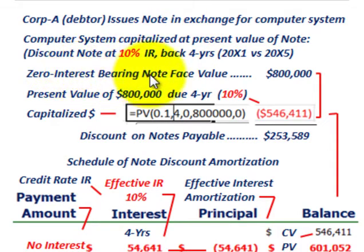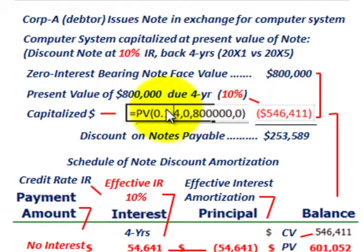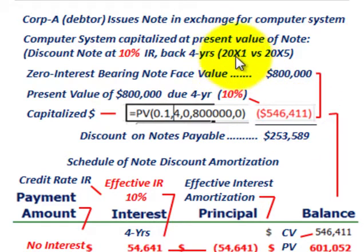We start with this zero interest bearing note whose face value is $800,000 — that's what they'll have to pay in 20X5. We need to determine what this note is worth in 20X1 when it was issued. Taking the present value of the $800,000 note due in four years, discounted back at 10% using a financial calculator or Excel, the $800,000 principal amount discounted back four years at 10% is worth $546,411 when issued in 20X1.